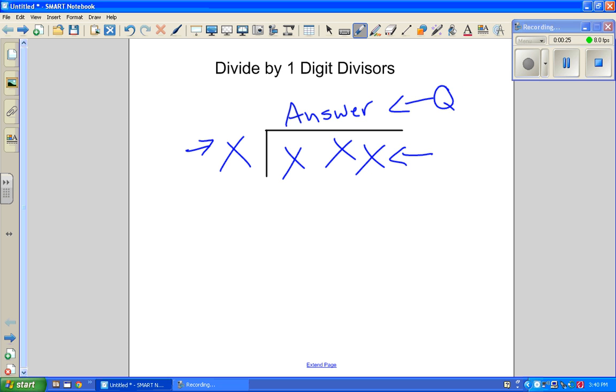Fancy name for that is quotient. We have our divisor, dividend, answer, which is also known as a quotient. Once in a while, if there's anything left, we have a remainder. That's pretty much the basics of it.